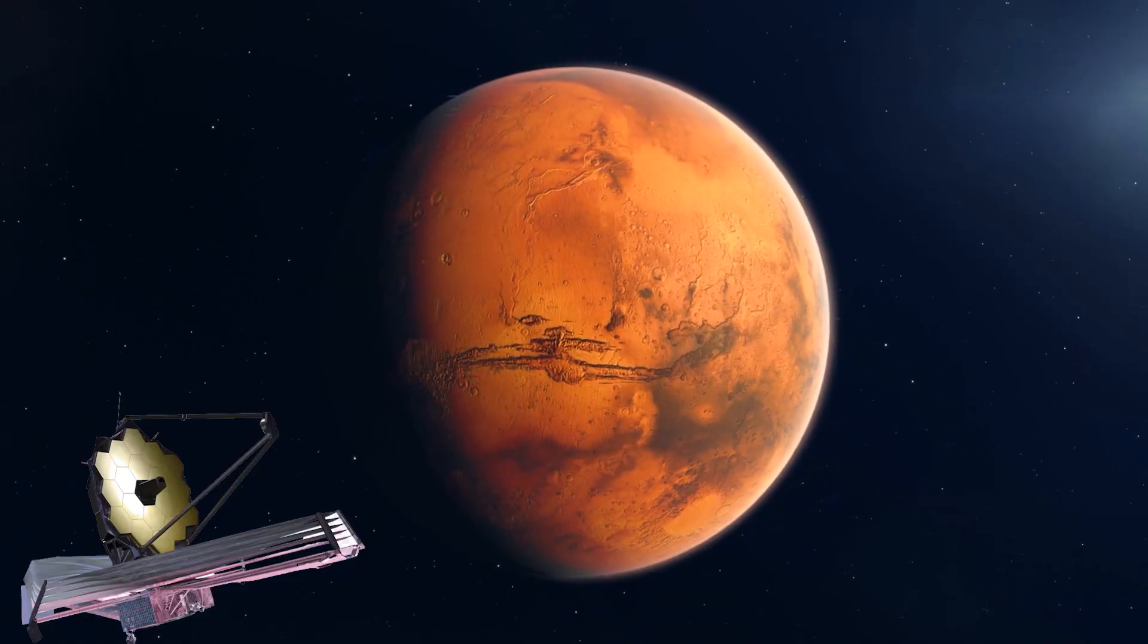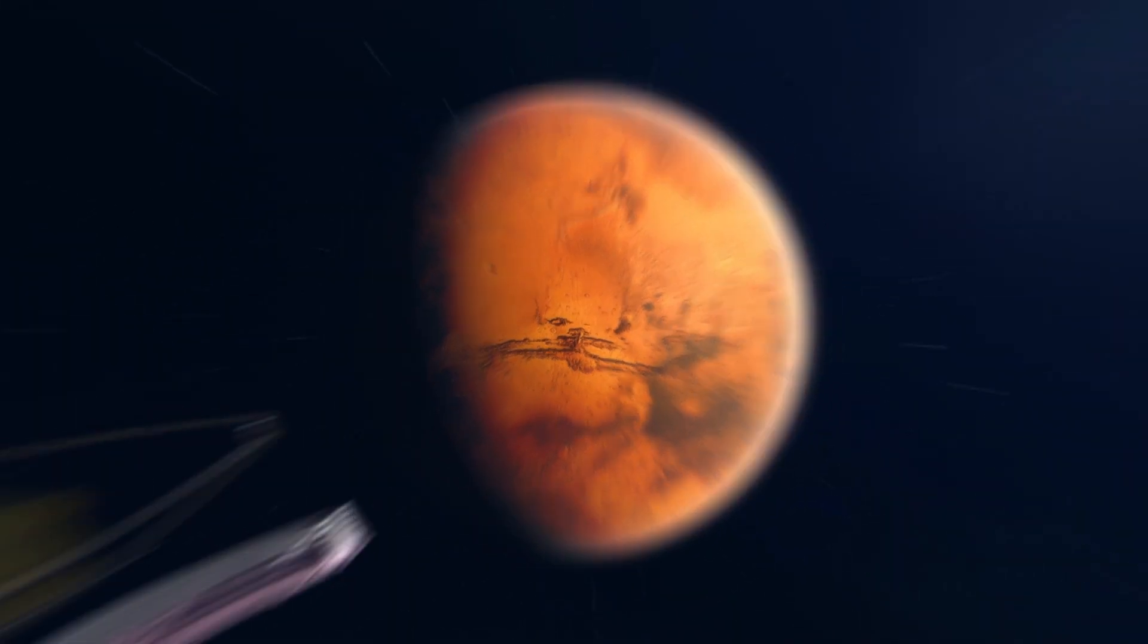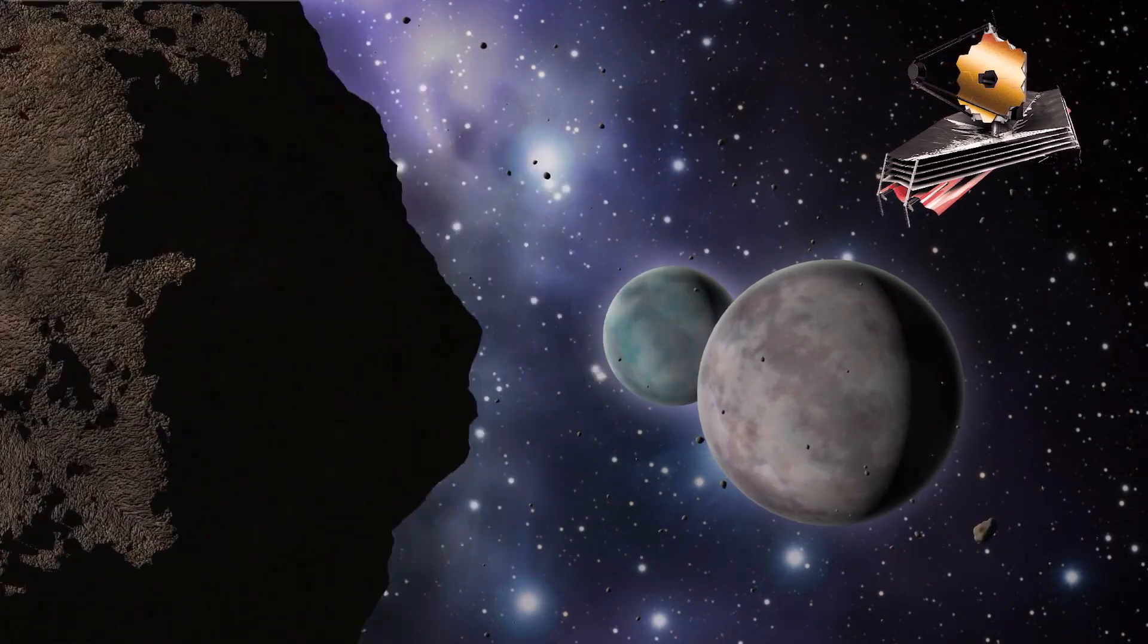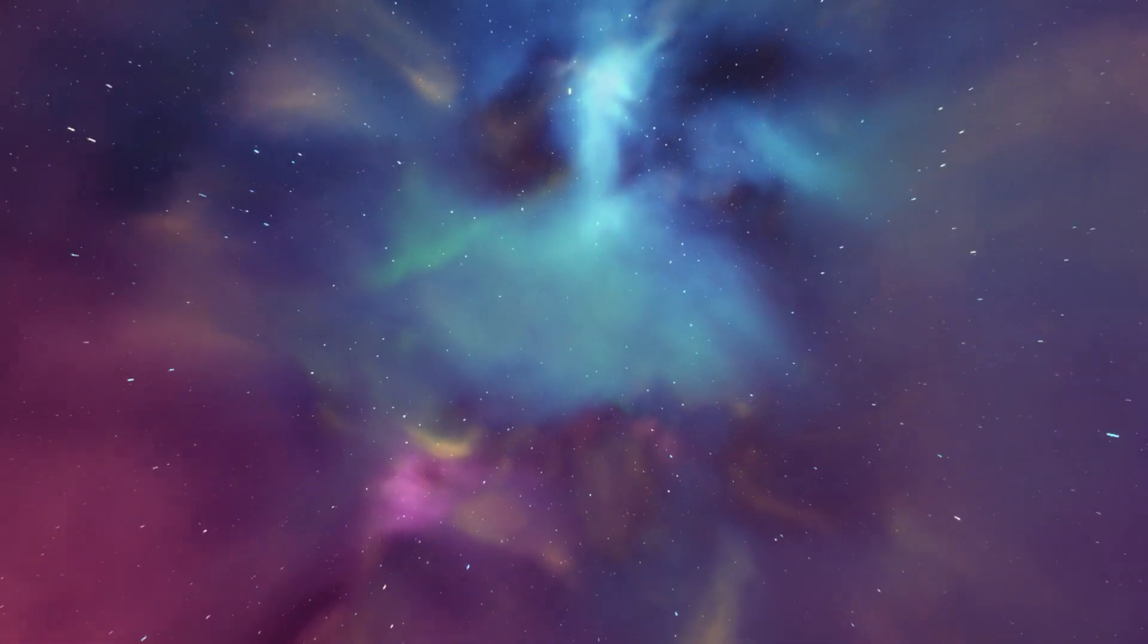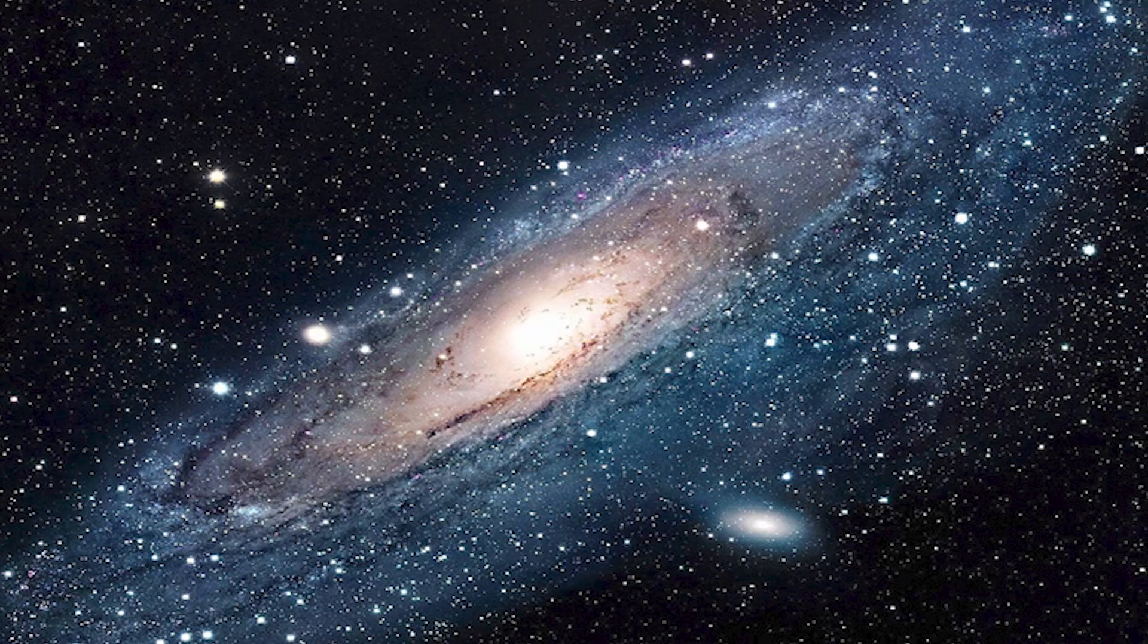Webb will also be able to see planets orbiting Mars or beyond, as well as satellites, comets, asteroids, and Kuiper Belt objects. It will also be able to observe more than 13.5 billion light years distant and collect evidence on the universe's origin.